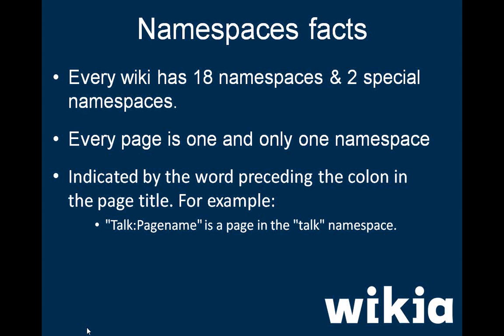Now let's chat briefly about namespaces. Namespaces are sections within a Wiki that allow for specific types of content to be grouped together within a specific area. By default, every Wiki has 18 namespaces and two special namespaces. Every page on your Wiki is within one of these namespaces and can be in only one. The most commonly used ones are user, talk, file, category, form, and help.